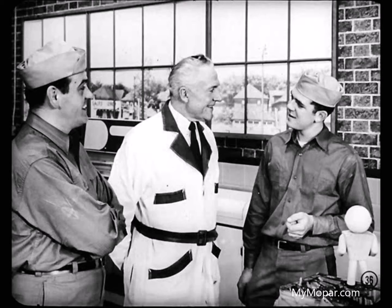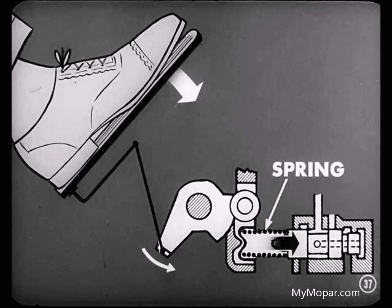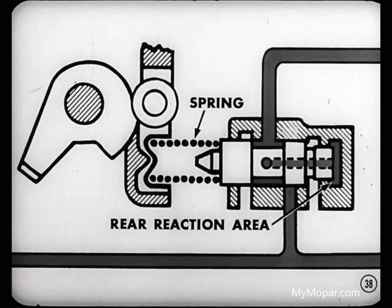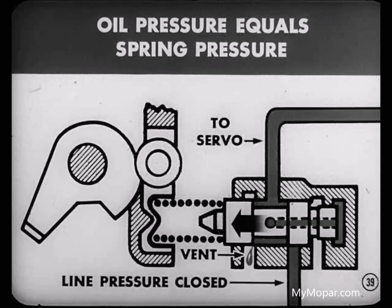Here's how that throttle valve operates. When the accelerator pedal is depressed, the throttle valve spring is compressed against one end of the throttle valve. Compressing this spring moves the throttle valve, uncovering a passage which admits line pressure to a reaction area at the rear of the valve. This pressure on the rear of the valve then moves the valve back against the spring force, closing off the line pressure momentarily.